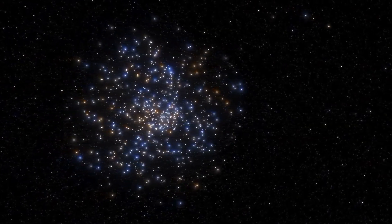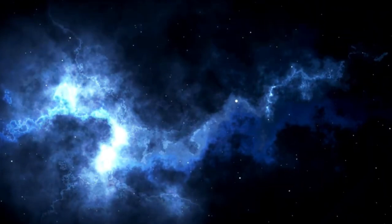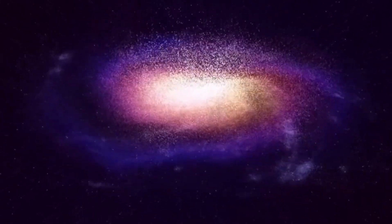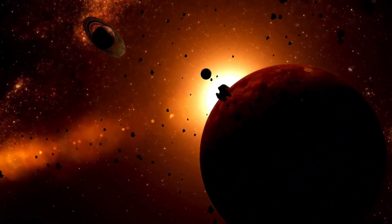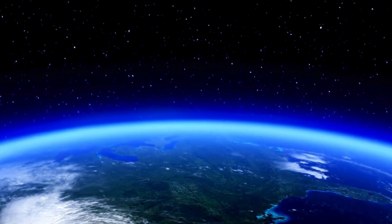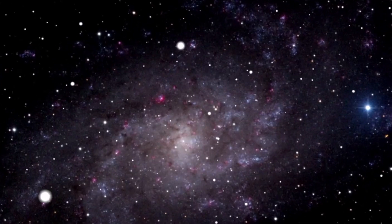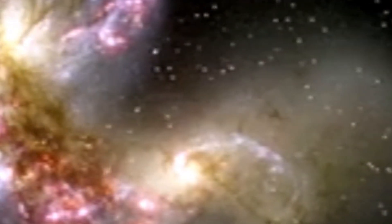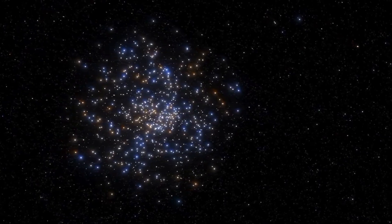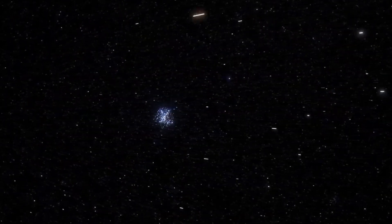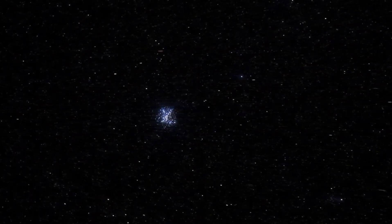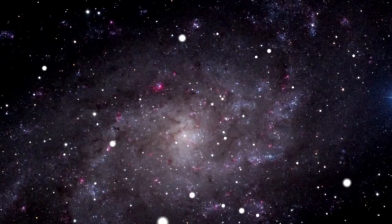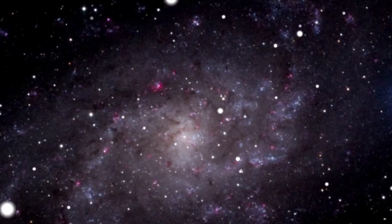Theories abound, each offering its own perspective on the enigmatic absence of moons within alum. Some speculate that the galaxy's tumultuous history may have played a role, with gravitational interactions or cataclysmic events leading to the expulsion or destruction of any moons that once resided within its domain. Others suggest that alum's unique characteristics, such as its massive size and luminosity, may have inhibited the formation of moons from the outset, preventing the emergence of these celestial companions. The lack of moons within alum also raises intriguing questions about the broader implications for galactic evolution. Moons are not merely passive bystanders in the cosmic drama but active participants influencing the dynamics of their parent bodies and shaping their long-term trajectories. Their absence within alum suggests a departure from the norm, challenging our understanding of how galaxies evolve and interact with their surrounding environment.